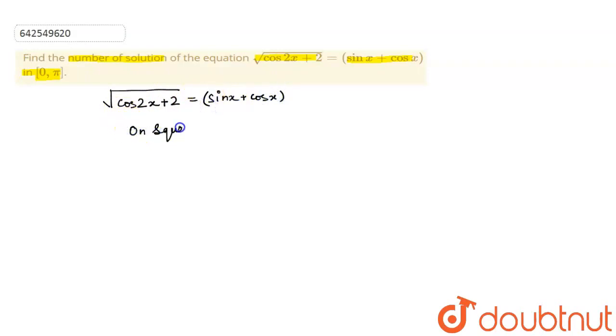On squaring both sides, what do I get? I get cos 2x plus 2 equals sin square x plus cos square x plus 2 sin x cos x.